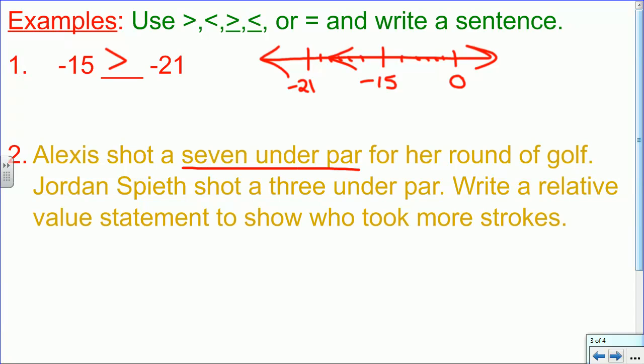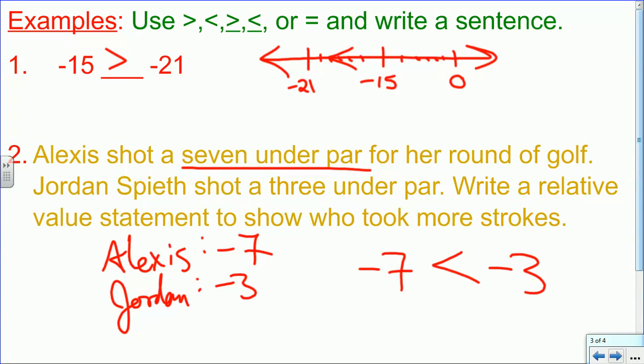So Alexis is the 7 under par, Alexis is negative 7. Jordan is negative 3. We're supposed to write a relative value statement, so we're comparing negative 7 and negative 3. If we don't want to draw the number line, we can just say that whichever is more negative has less value. So negative 7 is more negative, it has less value, so negative 7 is less than negative 3.